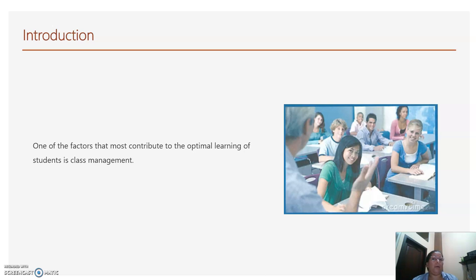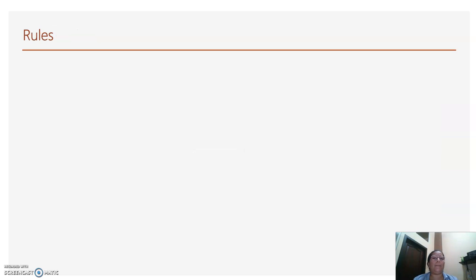One of the factors that most contributes to the optimal learning of students is definitely class management. If a student's behavior is not properly managed in class, it is very likely that the class will become troublesome. In this type of classroom environment, it is very difficult for the teacher to meet the objectives of the day, and the students will learn much less. For that reason, it is necessary to look for strategies that promote both a peaceful class environment and a healthy coexistence that allow for optimal learning.